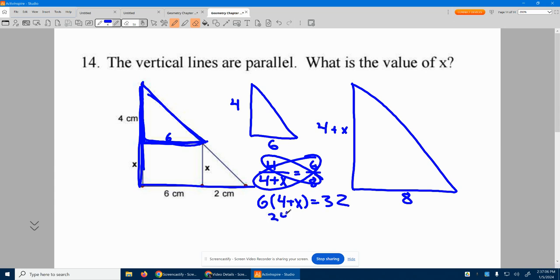We'll go ahead and distribute through. 24 plus 6X equals 32. Move the 24 over by subtracting 24 from both sides. 6X equals 32 minus 24 is 8. So we divide by 6.